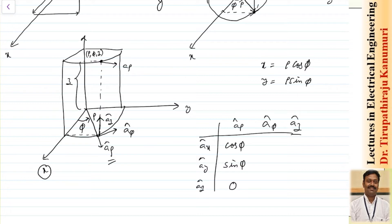For a_z: in the rectangular coordinate system, ax and ay are 90° perpendicular to a_z, so their dot products with a_z are zero. Only a_z dot a_z equals 1.